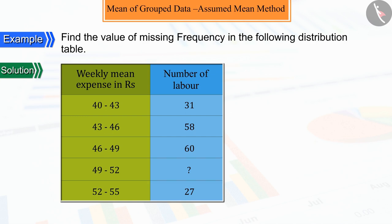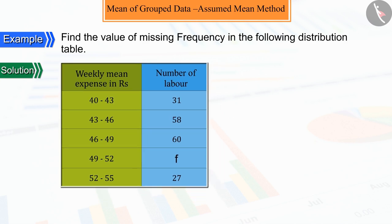For this, we have to find the mean of this distribution. From the table, we can see that to find mean, we will need the midpoints of these class intervals, for which we will use the class mark or midpoint formula.